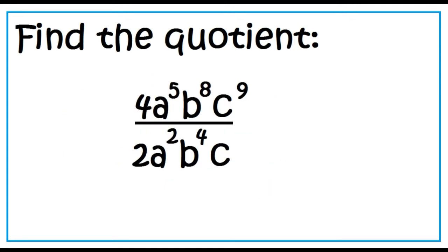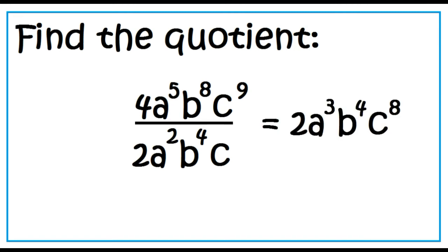Divide 4a to the 5th, b to the 8th, c to the 9th by 2a squared b to the 4th c. The answer is 2a cubed b to the 4th c to the 8th.